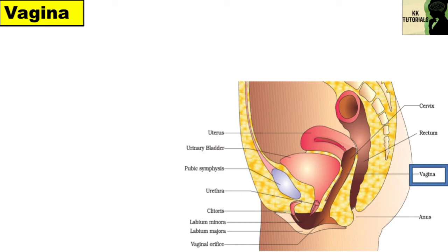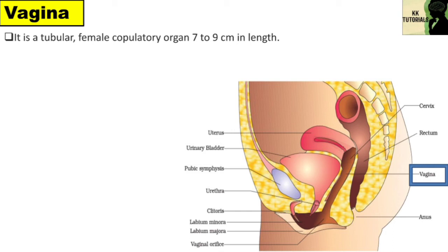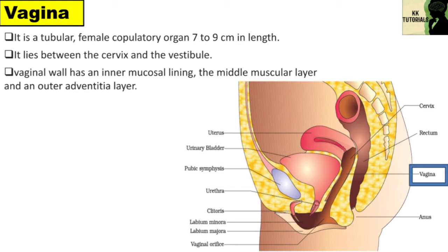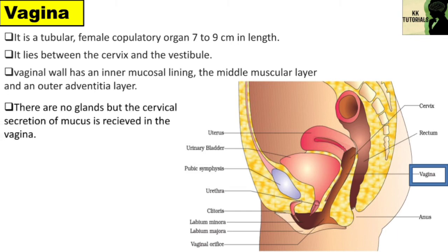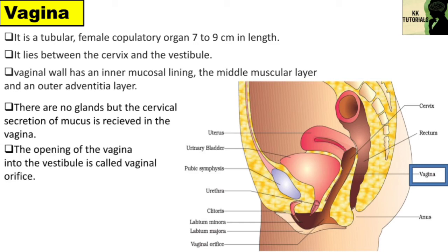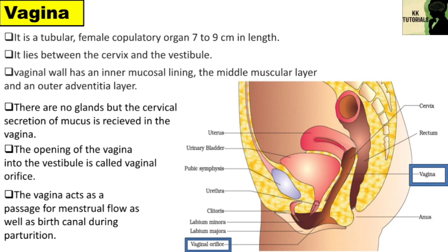Now let's talk about vagina. It is a tubular female copulatory organ, 7 to 9 cm in length. It lies between the cervix and the vestibule. The vaginal wall has an inner mucosal lining, a middle muscular layer and an outer adventitia layer. The mucosal epithelium is stratified and non-keratinized and stores glycogen. There are no glands but cervical secretion of mucus is received in the vagina. The opening of the vagina into the vestibule is called the vaginal orifice, which is covered partially by a fold of mucous membrane called the hymen. The vagina acts as a passage for menstrual flow as well as birth canal during parturition.